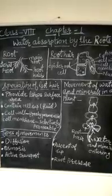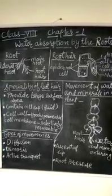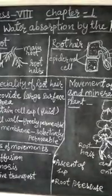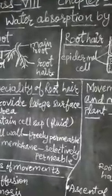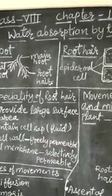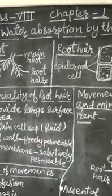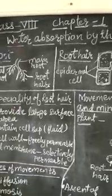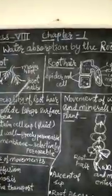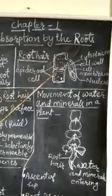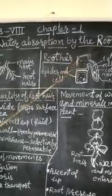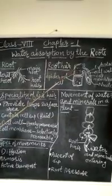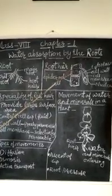Welcome students. In last class I explained transporting tissues, that is xylem and phloem, and their main function. In today's class I am going to explain water absorption by the roots, means how roots absorb water and minerals from soil.